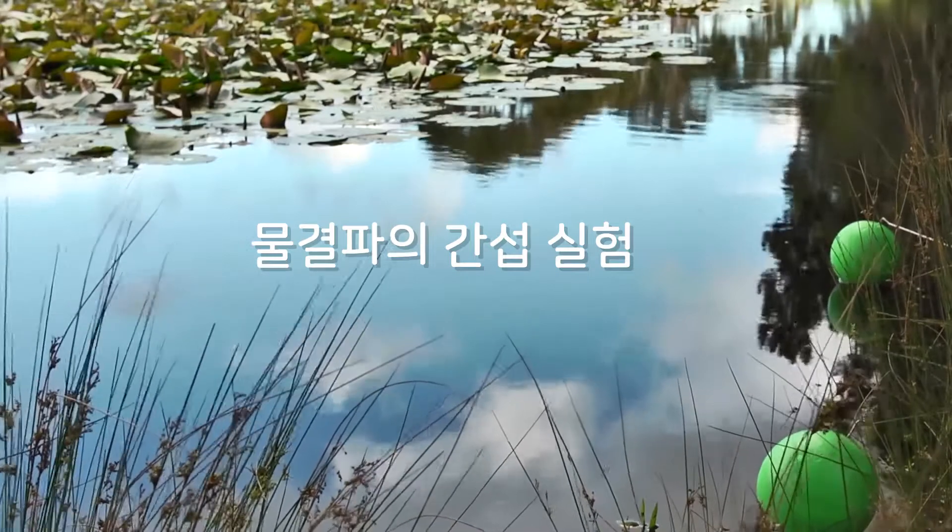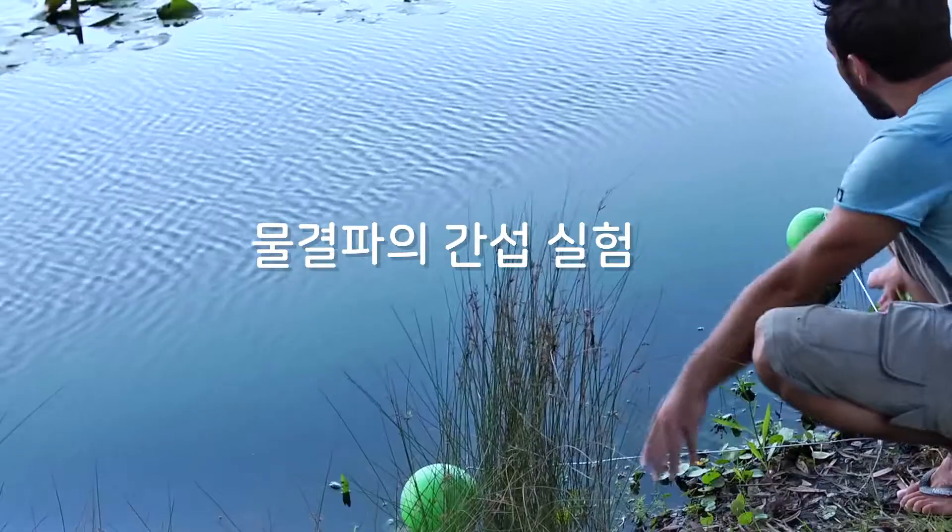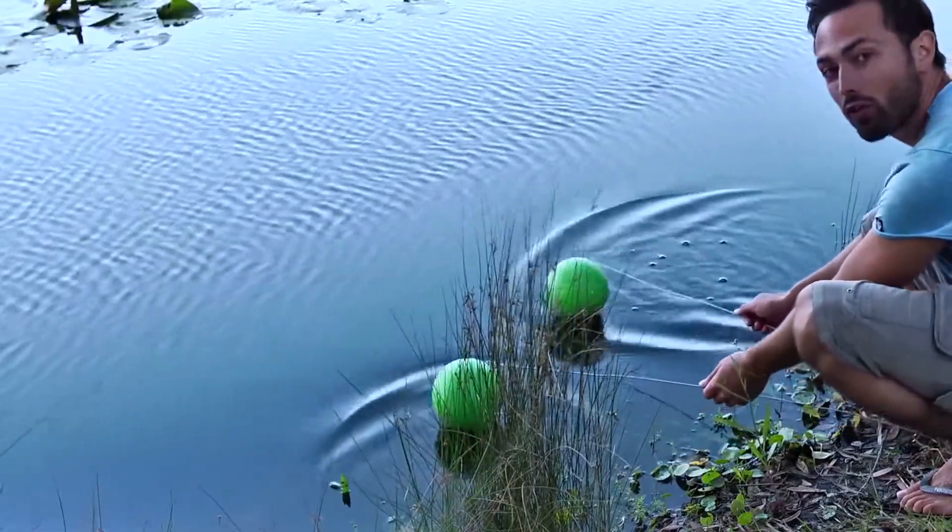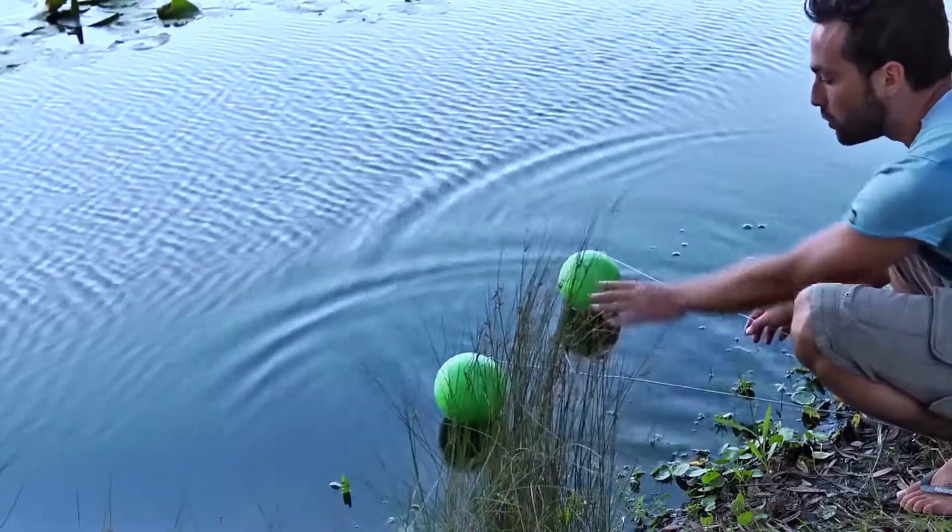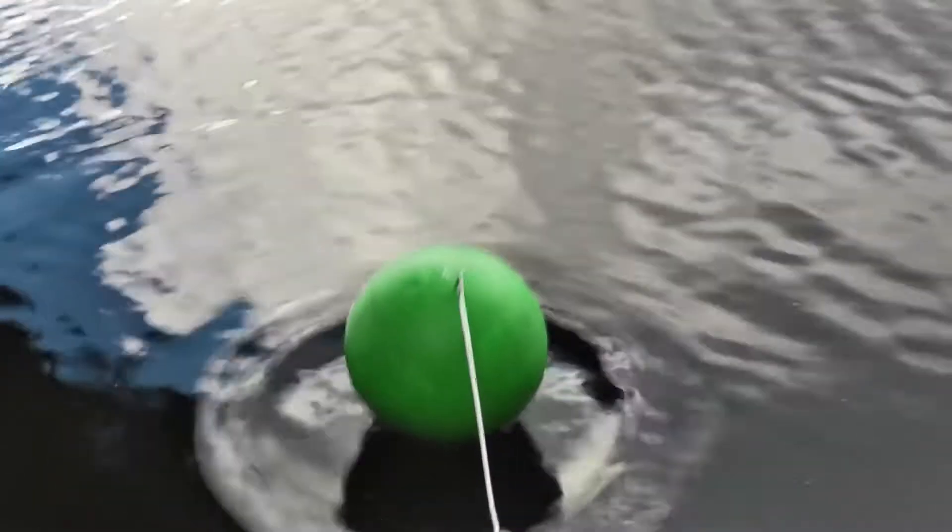In here on a little pond where we can see this with water waves, I have two sources of ripples which are basically like the two slits. When I create ripples with a single source, they travel out with circular wavefronts.